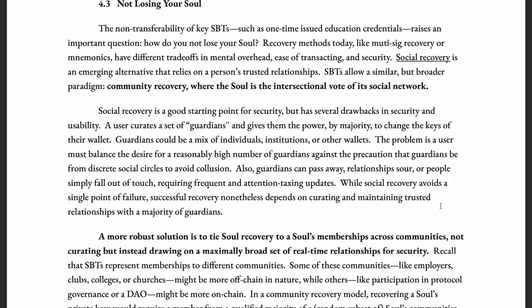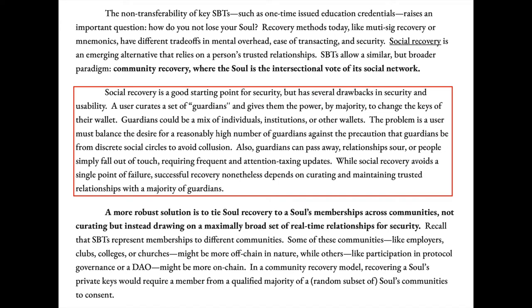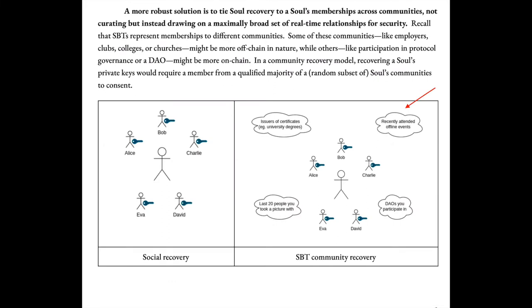The third use case from our introduction was that people use centralized exchanges like Binance and Coinbase to hold their coins, because once a private key is lost, funds in the wallet cannot be recovered. A proposed solution is community recovery, where people have a list of guardians consisting of friends and institutions — though guardians can pass away or people can fall out of touch. A better solution would be to tie soul membership across communities such as employers, clubs, colleges, or DAOs. Recovering a soul's private keys would require consent from a qualified majority of the soul's communities.